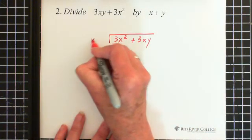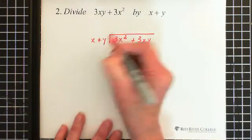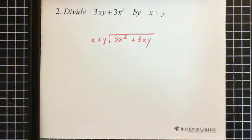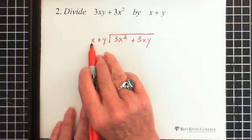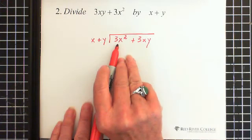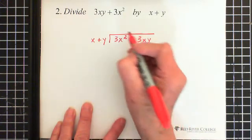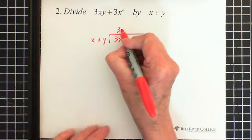And we multiply, or sorry, our divisor is x plus y. Now, again, first thing we do is we ask ourselves, what do we multiply by x to give us 3x squared? And that would be 3x.